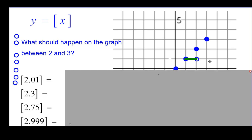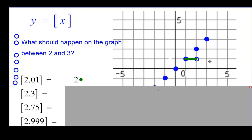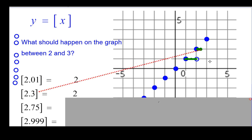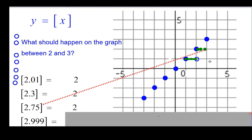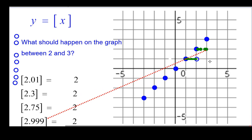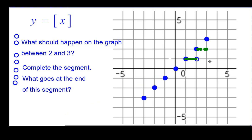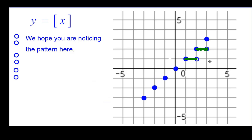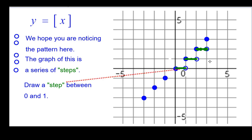All right. Between 2 and 3, well, 2.01 is 2. So we should plot over 2.01 up to 2. 2.3, also 2. 2.75, also 2. 2.999, also 2. So we can complete the segment, but what goes at the end of it? Another open circle because we could jump up to 3. So I hope you're noticing the pattern here, and that is this graph is really a series of steps. Left end point closed, open end point, or right end point open.